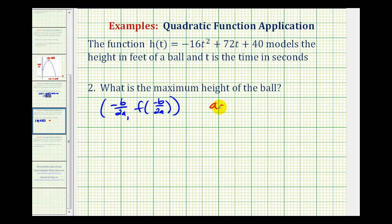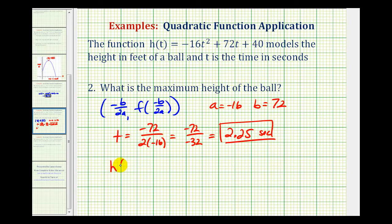So looking at our function, a is equal to -16, and b is equal to 72. So the x-coordinate or t-coordinate would be equal to -72 divided by 2 times -16, which would be -72 divided by -32, which comes out to exactly 2.25, which is time in seconds. This is how long it takes for the ball to reach the maximum height, but the question asks for the maximum height. Now we need to find h(2.25).